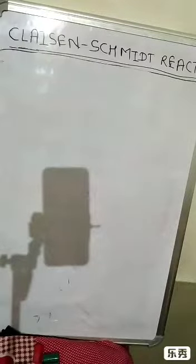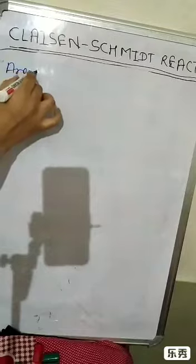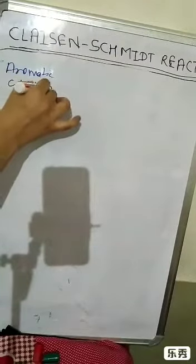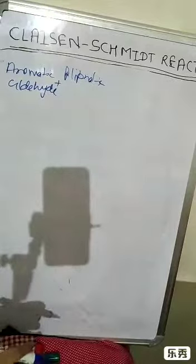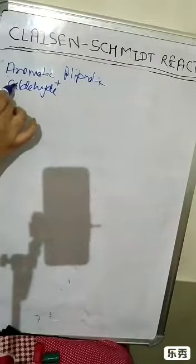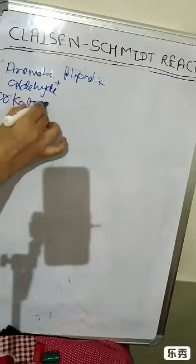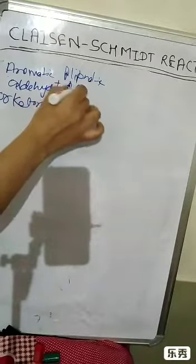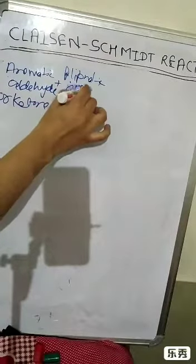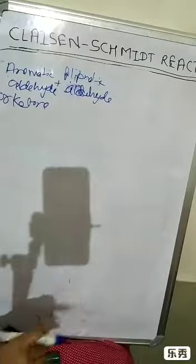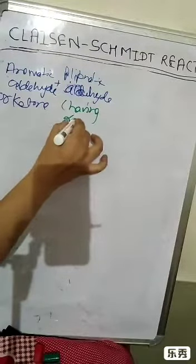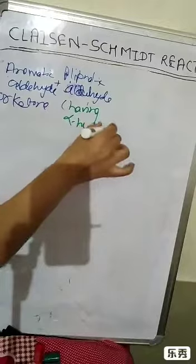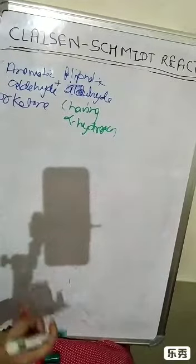Now the question is: what is the Claisen-Schmidt reaction? When an aromatic aldehyde reacts with an aliphatic aldehyde or ketone having alpha hydrogen, under mild conditions — that is, a weak base — the Claisen-Schmidt reaction occurs.